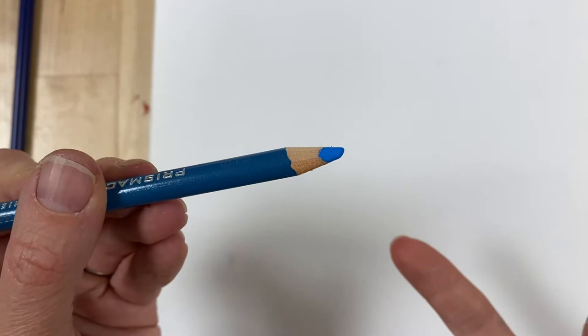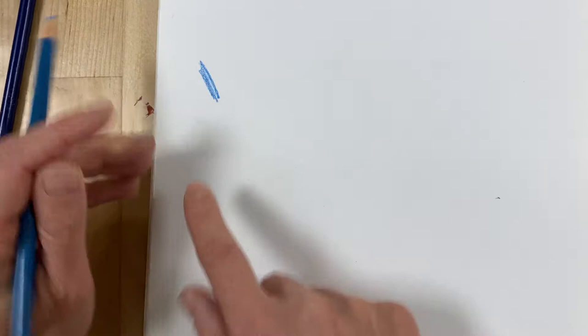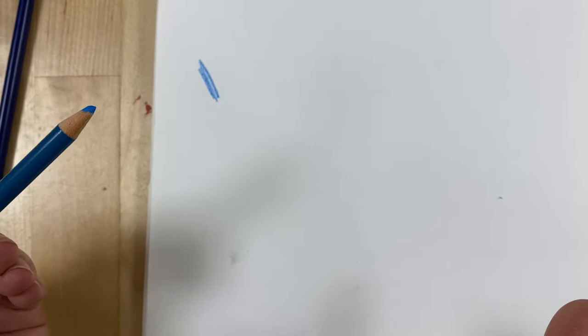So colored pencils, the material, it's just a pigment mixed with wax. So because it's wax it's different than graphite. Graphite, if I were to draw a little bit, I could then use my finger and smudge, but since this has wax in it, it doesn't really work in the same way.